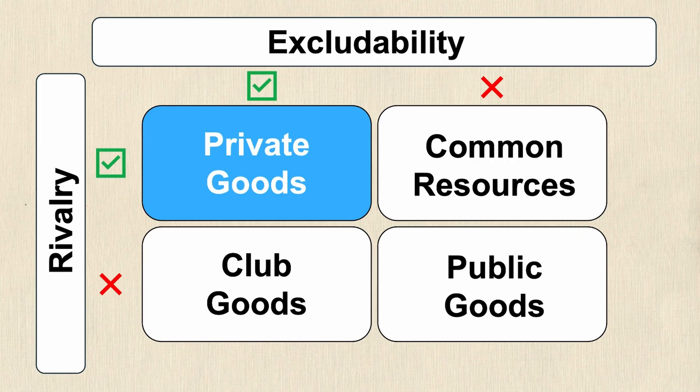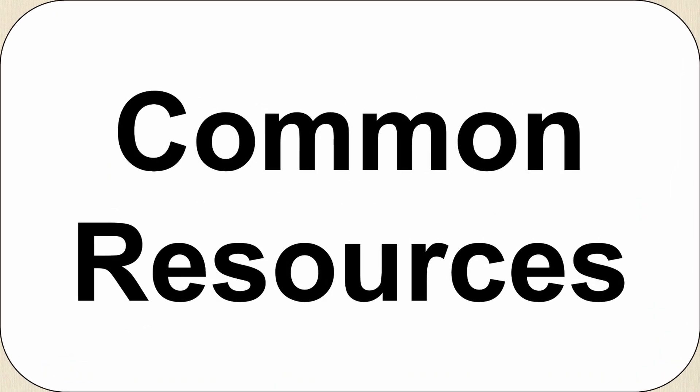Let's take a look at the second type which is common resources. Common resources are not excludable but they are rivalrous. This means that there's no way to exclude people from using these goods, but the consumption of these goods by one person prevents another person from consuming. This one's a little bit harder to understand than private goods, but let's give some examples.